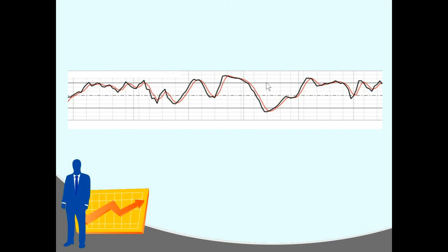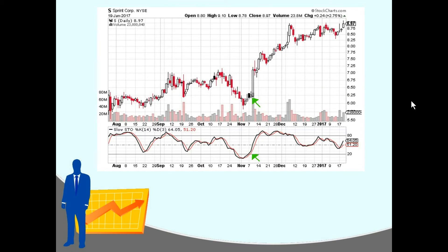If it's overbought and you already own it, you might consider selling your shares if the line goes above 80. Now, what a lot of people do is they don't buy right when the black line goes below 20 into oversold territory — they wait until it goes back up out of oversold territory, in other words when it comes back above 20. That's when they buy.